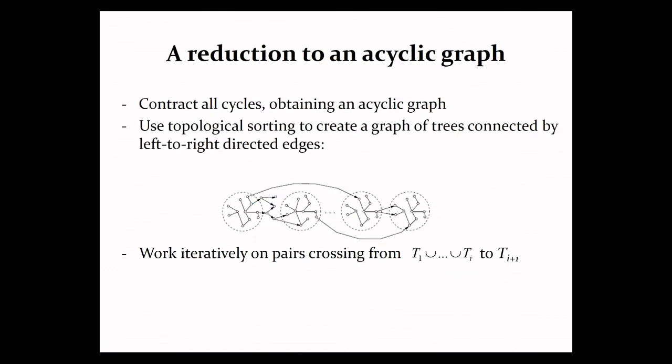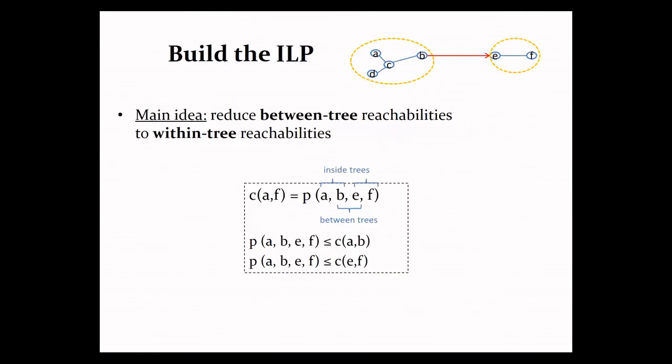However, we can still design an efficient integer linear program for this case by contracting whatever cycles we can and using topological sorting to create a graph of trees that are connected by directed edges, all of them going from left to right. If we create such a graph, then we can work in order on the pieces, on the trees of the graph and get our program. And the key idea in designing this linear program is the fact that we can reduce between tree reachability constraints to within tree reachability constraints that we know already how to handle.